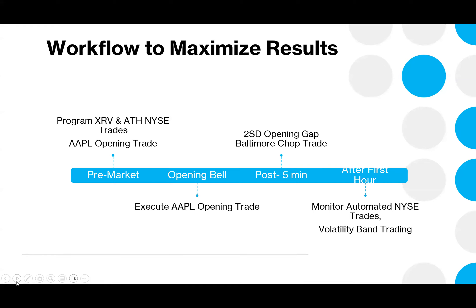We've got the program trades set up — about six or seven trades on those trading plans, all running in the background. The secret to our success is that the best use of our hands is not to fiddle with these program trades we had set up. We let those run over the course of the day. They're in a fully developed trading plan — we know the entry, stop, and target. Everything's totally automated. We know exactly what to expect from them, so there's no point tinkering during the session with those trades.